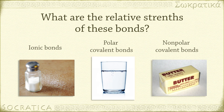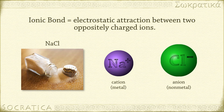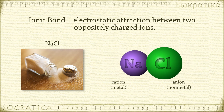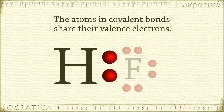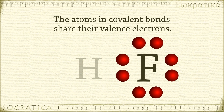This video will talk about the relative strengths of these three types of bonds. An ionic bond is formed from the electrostatic attraction between two oppositely charged ions — an anion attracted to a cation. Covalent bonds, on the other hand, involve sharing of valence electrons. The shared electrons spend part of the time next to one of the atoms in the bond, and part of the time next to the other atom.